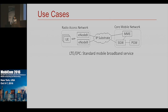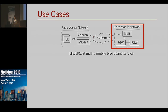Now I'll talk about some of the use cases in Proteus. This is the 4G LTE standard broadband service. We have the radio access on one side, connected to a core on the other side — a mobile network core with components such as MME, S-Gateway, P-Gateway, and some other components. I use this service as the base case and show use cases for evolution from this architecture.